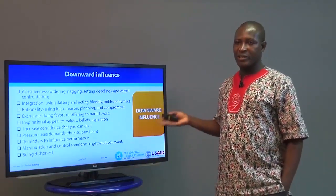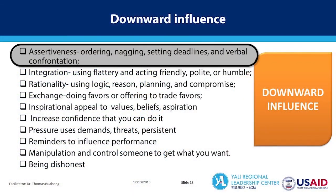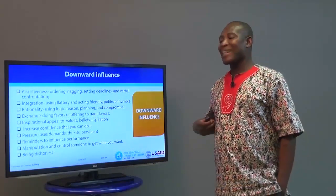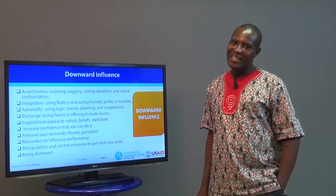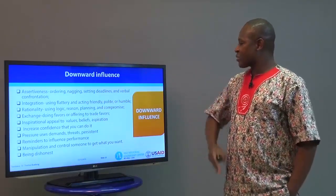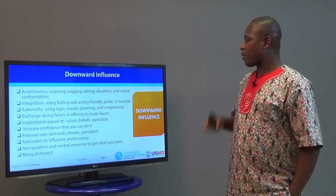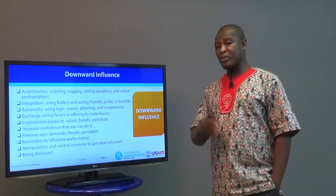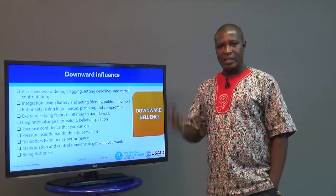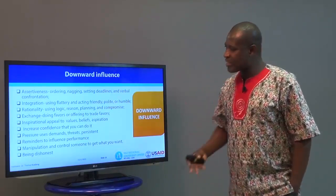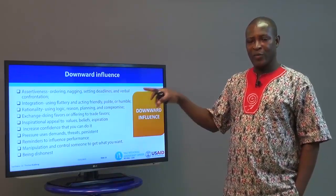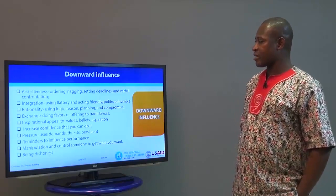These are the downward influencing tactics — ways superiors change and influence the behavior of subordinates. One is assertiveness. When they assert themselves, they do many things including nagging — they will nag and nag until you give up and do it. They give orders, set deadlines: 'By Friday you should have finished this.' There's also verbal confrontation: 'What are you doing? What did I ask you to do? Hurry up and do it.' It is ethical and proper if used at the right time.